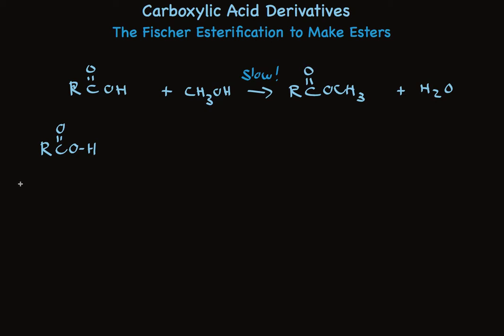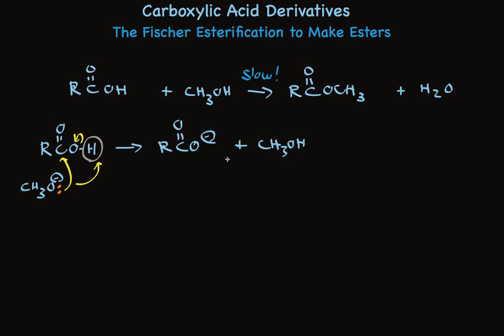The first thing that might come to mind is reaction with a better nucleophile using basic conditions. Using a base to remove the proton, we would have a much better nucleophile, and the idea is that this nucleophile would add to the carbonyl — nucleophilic acyl substitution. But there's something terribly wrong with this idea. Because carboxylic acids are acids, this proton will be removed by the methoxide acting as a base, forming a carboxylate — and then it's game over. We now have a negatively charged carbonyl compound, and nucleophiles aren't going to be attracted to negative charge. We need to abandon the idea of using base and use an acid catalyst instead.